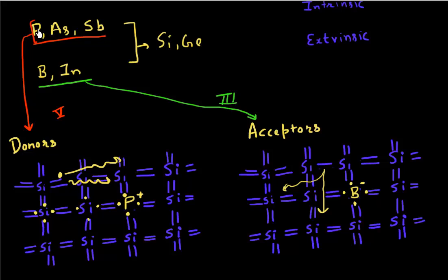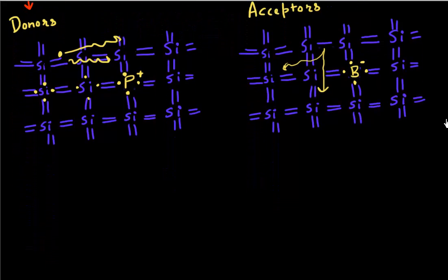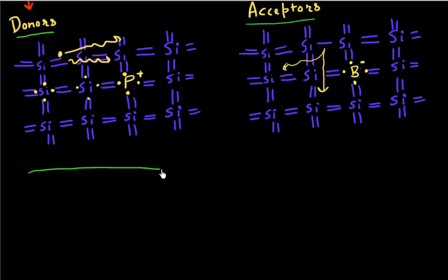So this is what is actually happening when we add either donor atoms, which are in group five of the periodic table, or acceptor atoms, which are in group three of the periodic table. Now let's visualize how we depict this in terms of a band diagram — where do these donor and acceptor atoms show up in the band diagram? Let's draw the band diagram for the case of silicon. I have my conduction band and my valence band. The x-axis on my band diagram represents distance — as I move along this axis, I'm moving along the lattice. The y-axis represents energy.